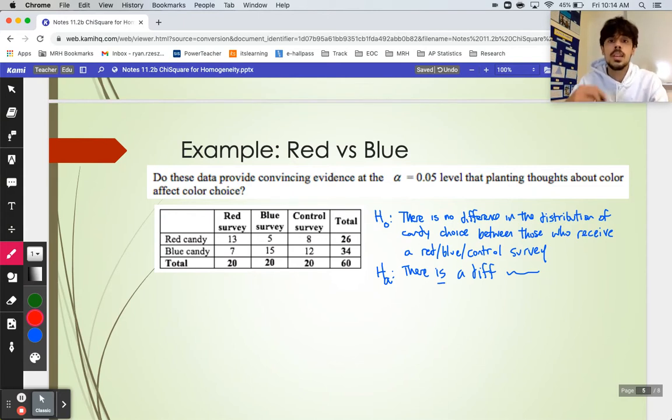Remember H₀ is saying there's no difference, statement of no difference. No difference in what? Well, no difference in what candy people choose depending on what survey they get. Hₐ will then be that there is a difference. And you'll set a significance level as well. I'm going to pause and come back with that. All right, so I'm back with my hypotheses written out here, or at least H₀. Statement of no difference for H₀. There's no difference between the different surveys in terms of what candy people choose. Good word to have right here: really essential word. Make sure the word distribution makes it into your hypotheses. There's no difference in the distribution of your response, which is the candy choice, between your different surveys.